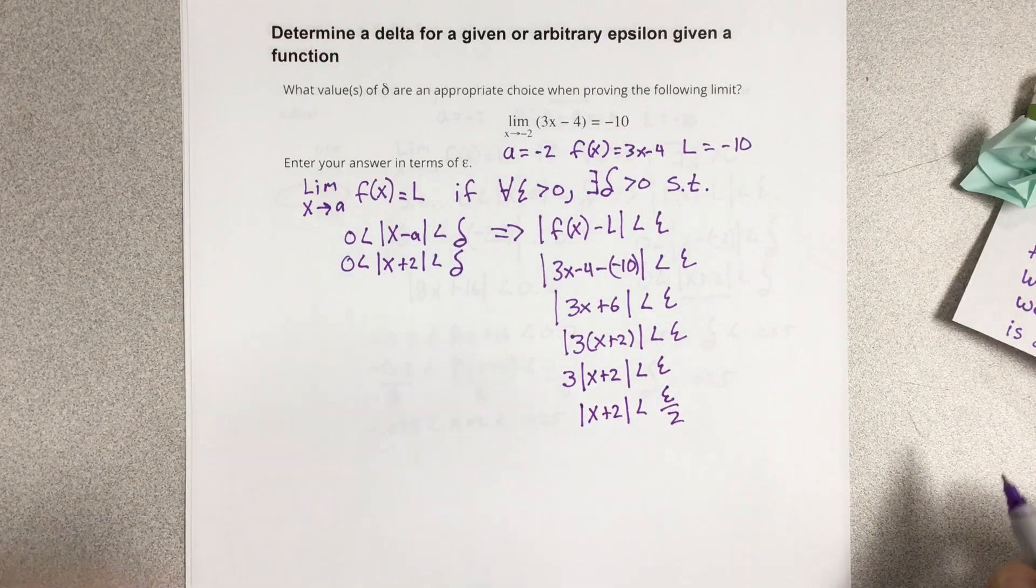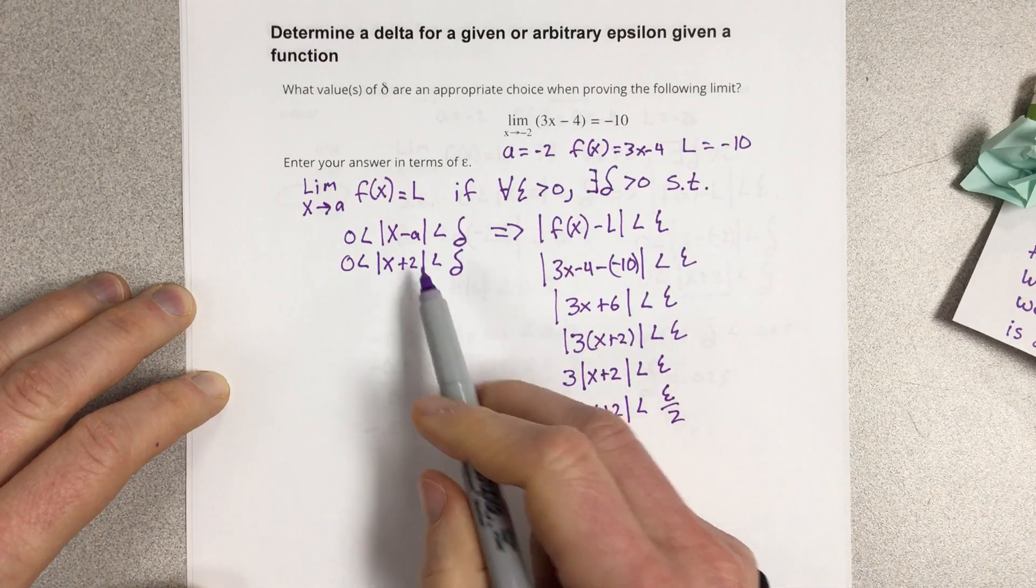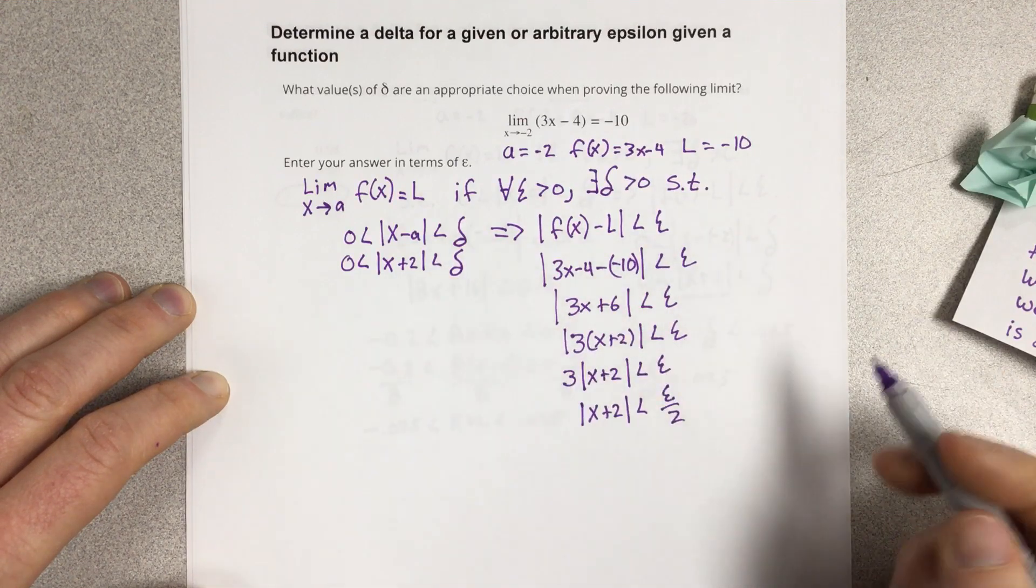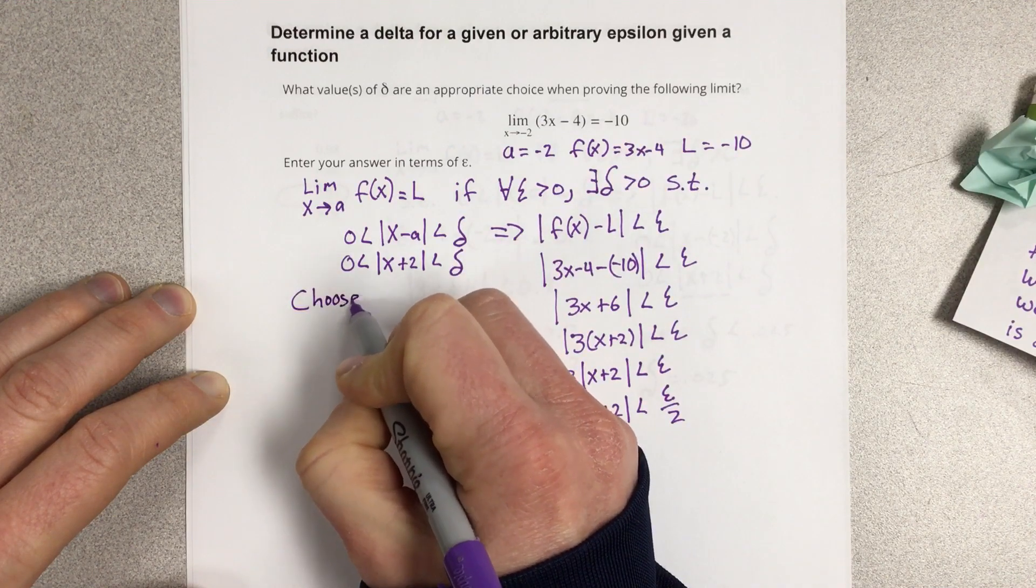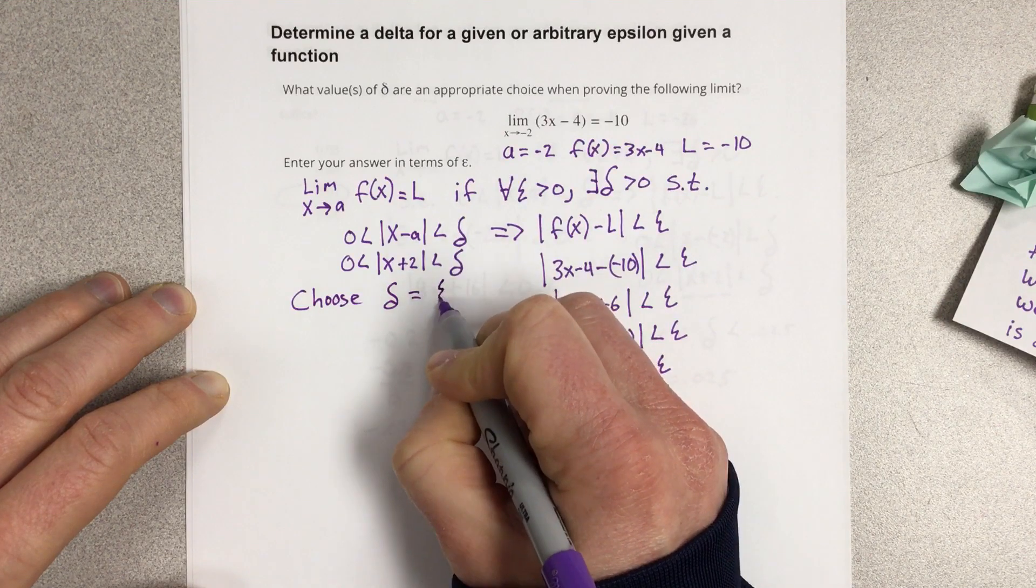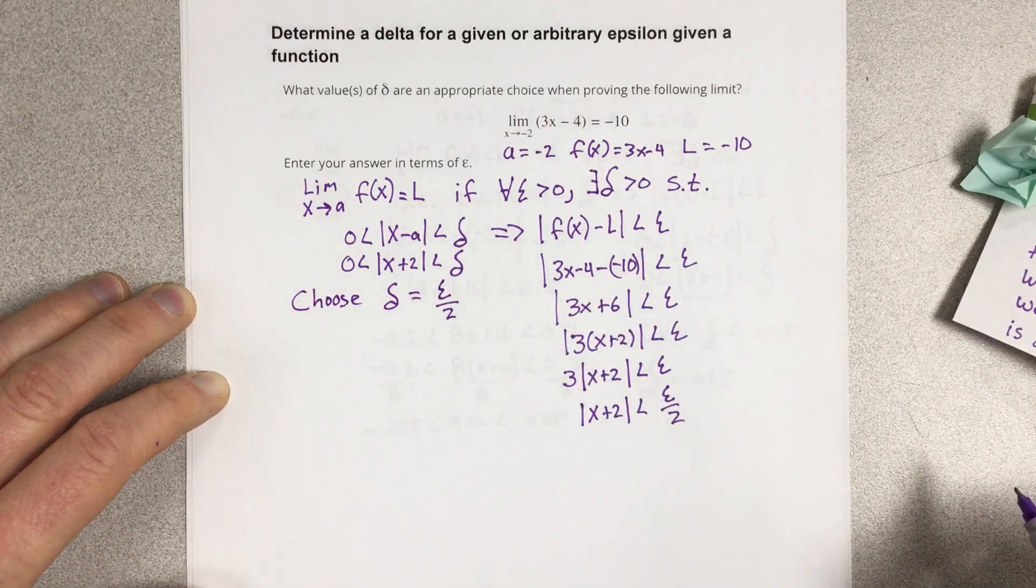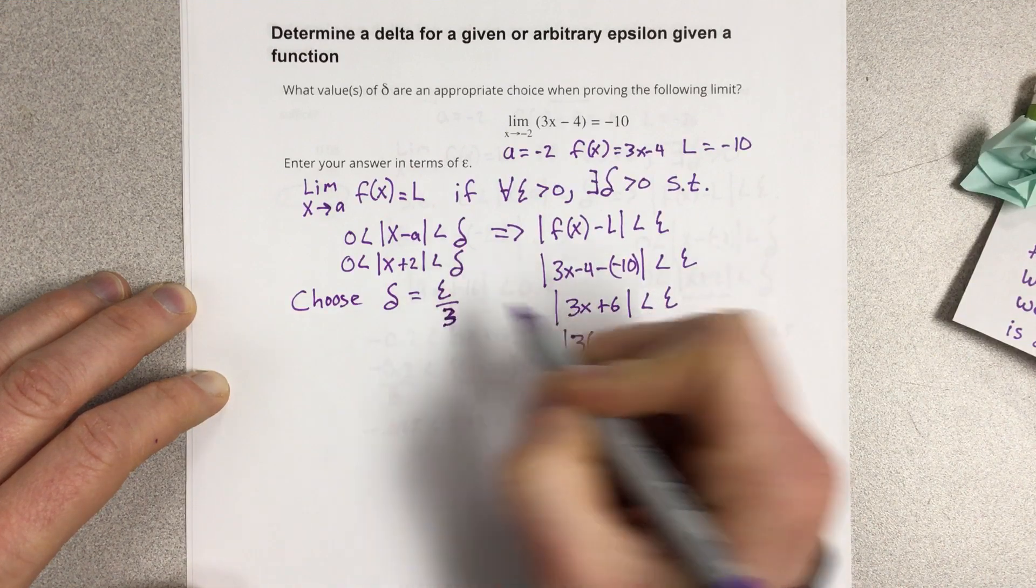So when we're going to prove this, what we would do is, because we have absolute value of x plus 2 in each piece here, and the absolute value of x plus 2 is supposed to be less than delta, what we would do is we would choose our delta to be equal to epsilon divided by, sorry I said 2 there, I meant 3, divided by 3. So epsilon divided by 3.